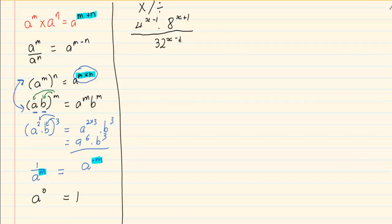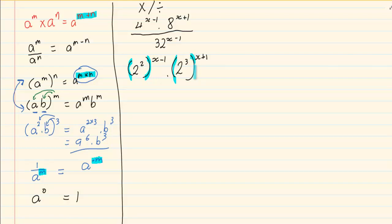In exponents, the heart of the work is prime numbers. So first we break down 4, 8, and 32 into prime numbers, giving us 2 to the power of 2 with bracket (x minus 1), times 2 to the power of 3 with bracket (x plus 1), all over 2 to the power of 5 with bracket (x minus 1). Notice that we keep the brackets — the reason is that the 2 inside must multiply with both the x and the minus 1; if you drop the brackets you forget to do that.